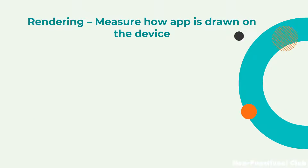Next would be the rendering time — this measures how the app is drawn on the device across different screens. The major aspect would be render time. Suppose you are testing an Amazon application and you are searching for some item; the render time in which you are able to fetch the data for that particular item on the Amazon app would be measured in microseconds, and that is the render time metric.